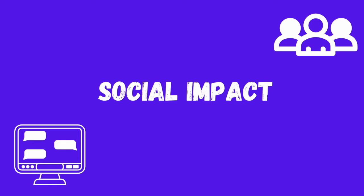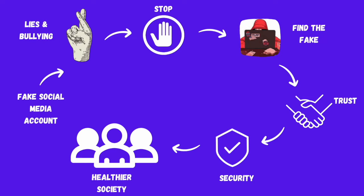Fake social profiles are breeding grounds for lies, cyberbullying, and mean-spirited behavior that can hurt people and communities. By spotting these fake profiles, we can stop them from spreading false information, ensuring that reliable information is being circulated. We use Find the Fake to create a digital world where knowledge is based on facts, not rumors or lies. This restores trust in online interactions as users can be more confident that they are connecting with real individuals, leading to healthier online communities. Fake accounts have also been used to manipulate public opinion and interfere with democratic processes — by countering fake profiles, we help protect the integrity of elections. When individuals know that fake profiles won't go unnoticed, they are less likely to engage in harmful online activities, promoting a more respectful and kinder online culture.